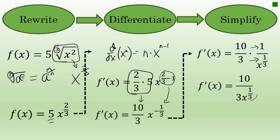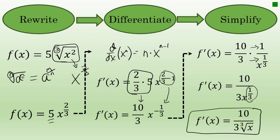And finally, instead of writing our answer with a fractional exponent, like the original function, we'll write it with radical notation. The derivative of f of x in simplest form is 10 over 3 times the cube root of x.